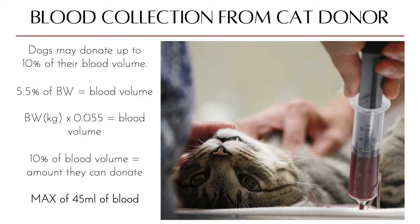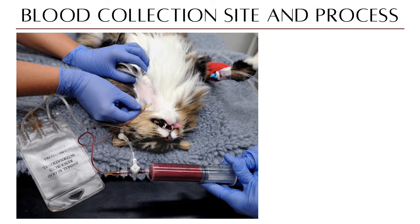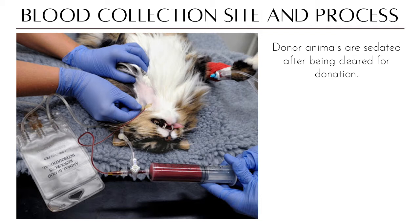For dogs, a blood collection bag is used — the same size as used for human donations since the amounts are similar. Donor animals are sedated because blood is collected from the external jugular vein and the animal must remain still throughout collection. An IV catheter is placed, and IV fluids are administered to replace the blood being removed so the animal does not decompensate.